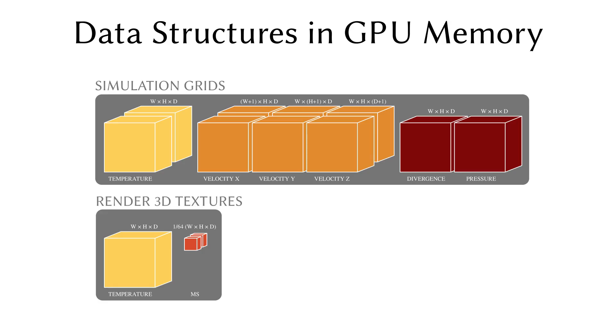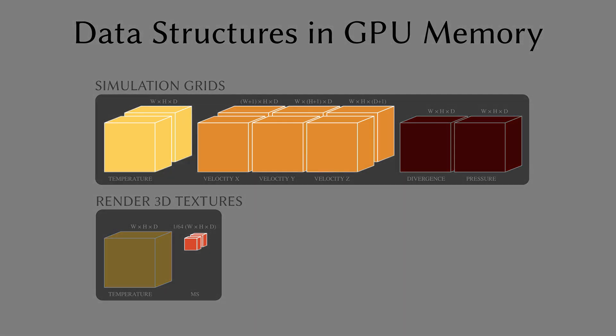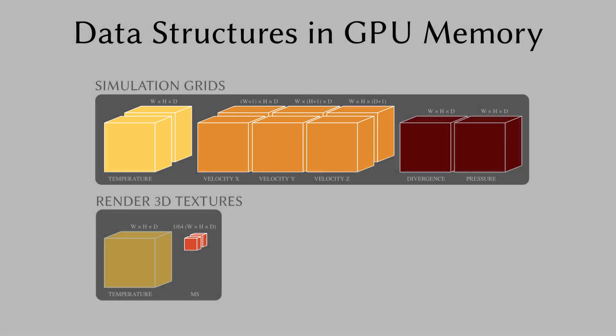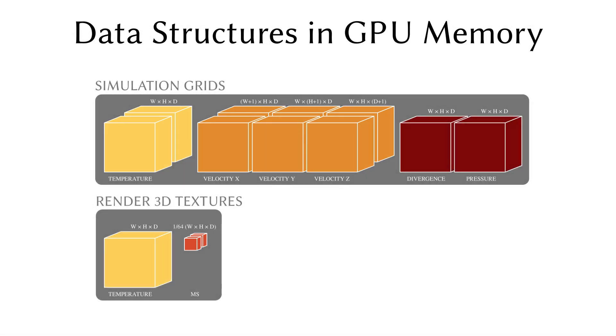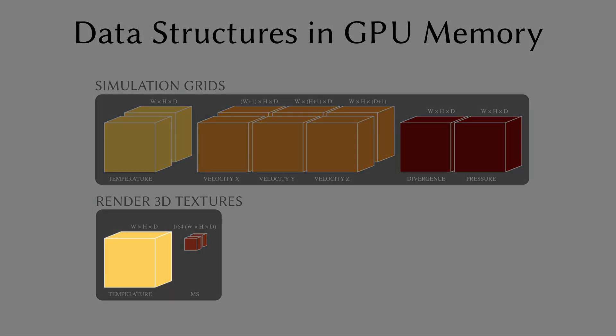Here is a visual representation of the main data structures required in GPU memory at runtime. Some structures are duplicated in depth to indicate the presence of a front and back buffer in memory. This data duplication is necessary for tasks where in-place operations are not possible. In order to use hardware trilinear interpolation for rendering, we copy the temperature grid to a CUDA 3D texture.